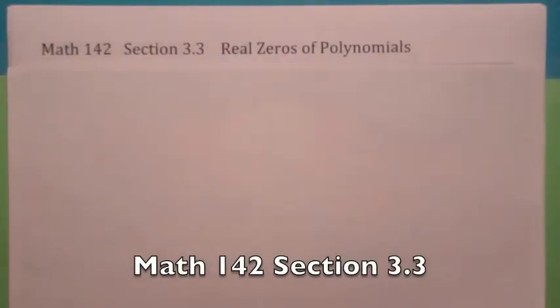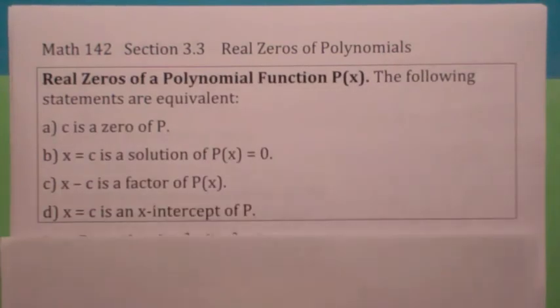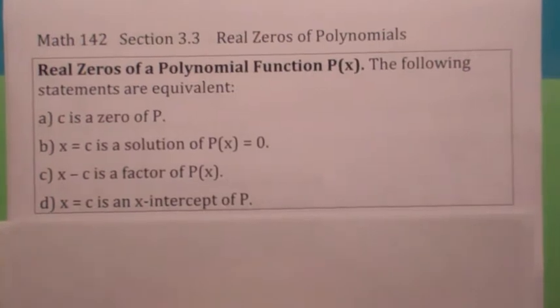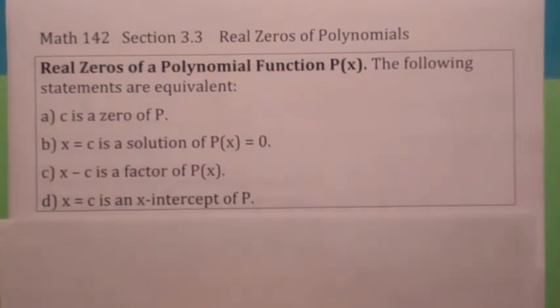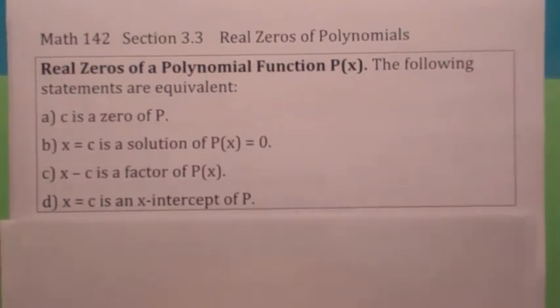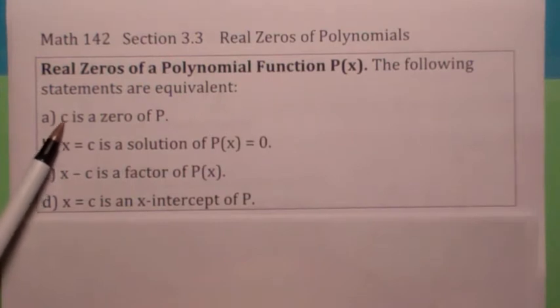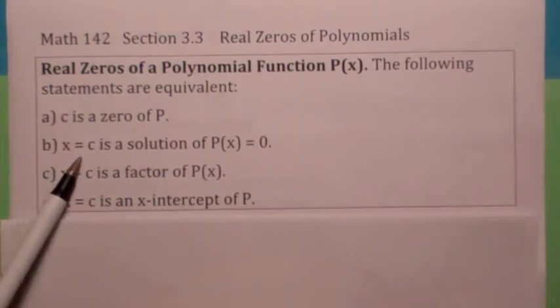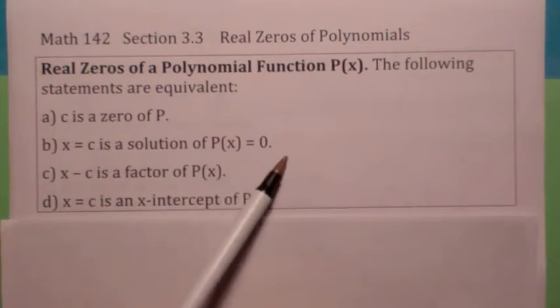Okay, we're continuing our discussion of the real zeros of polynomial functions. In this section, let me review what we talked about in 3.1. This is really a central idea here, the relationship among all these things. If you're talking about the real zeros of a polynomial function, remember that's the value of x that makes the polynomial function equal zero. It's a solution to P(x) equals zero.